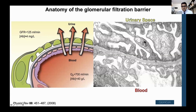On the right you can see the actual electron micrograph version of the schematic on the left. Again, you can see the nice basement membrane that orients the structures. On the outer aspect you can see the podocytes with their foot processes. On the inner aspect you can see the endothelial cells, which have little holes or fenestrae, which allow fluid to pass through to the next step of the filtration barrier.